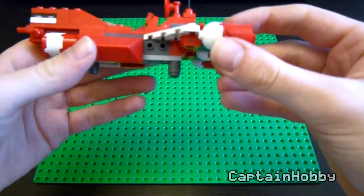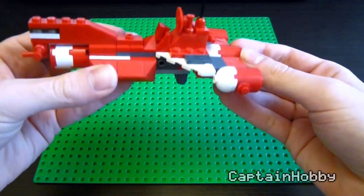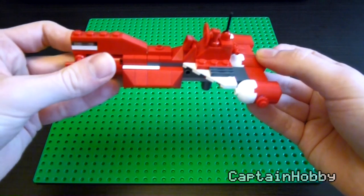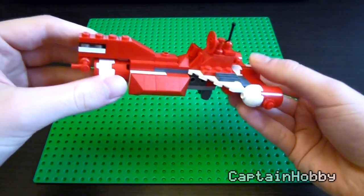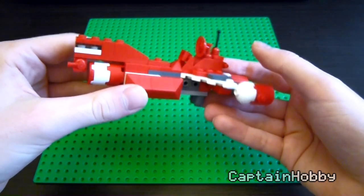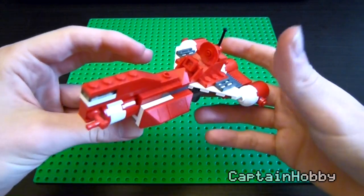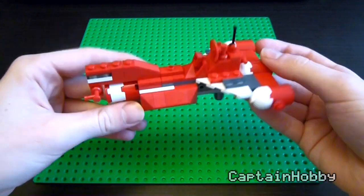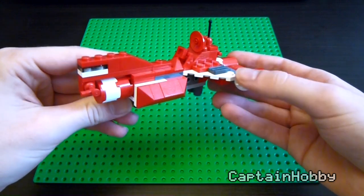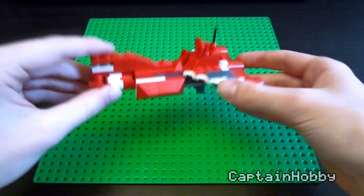It's called the Consular Class Cruiser, and it's been a set at least once, maybe even twice, certainly once, in the minifig scale. But it's never existed in this micro scale, but this is actually a really nice build, so today I'm going to show you how you can make your own.